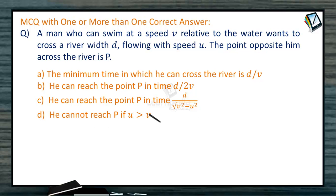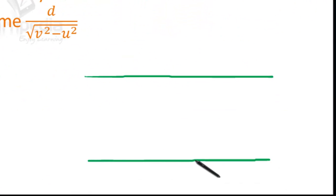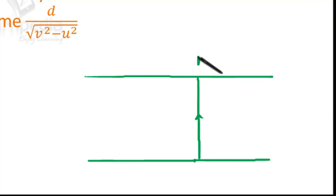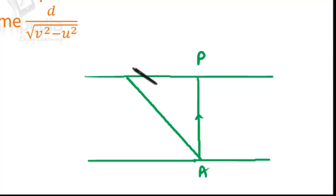Let us analyze how the problem looks. A man who can swim at a speed V relative to water wants to cross a river of width D flowing with speed U. If we take this as the river and the person starts from point A, the point exactly opposite to him across the river will be point P. So the person must swim in this direction.